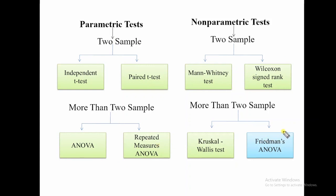This repeated measures ANOVA is a parametric, assumptions-based test. So if the assumptions of repeated measures ANOVA are not fulfilled, then we use Friedman ANOVA. Friedman ANOVA is equivalent to repeated measures ANOVA — whatever work repeated measures ANOVA does, the same analysis can be done by Friedman's ANOVA. The only difference is this is a non-parametric, assumption-free test. We do not check normality and homogeneity of the data. If my data is not normal, I can use Friedman's ANOVA.